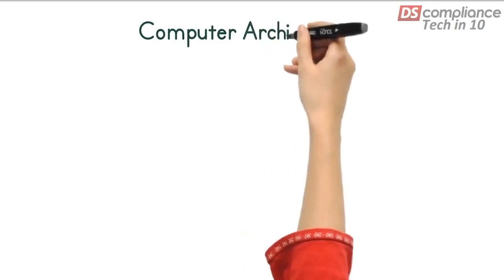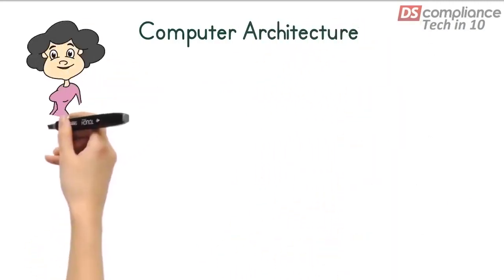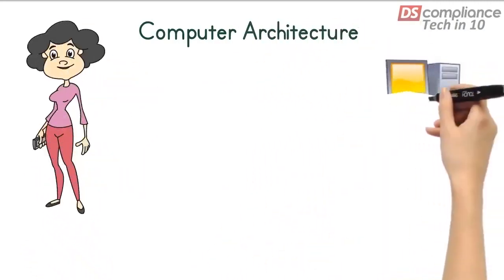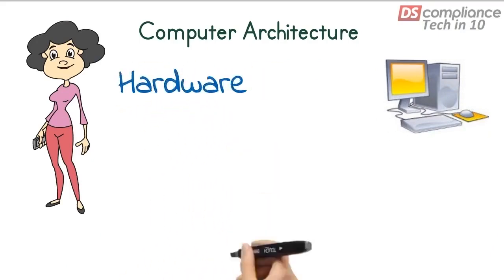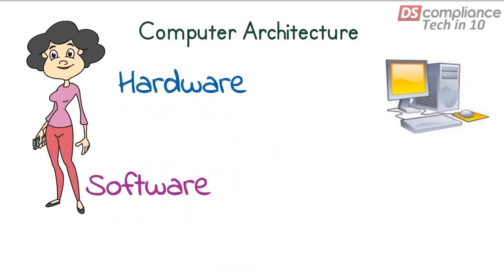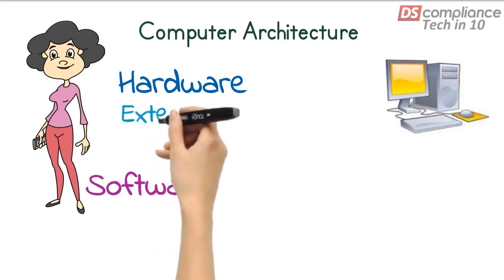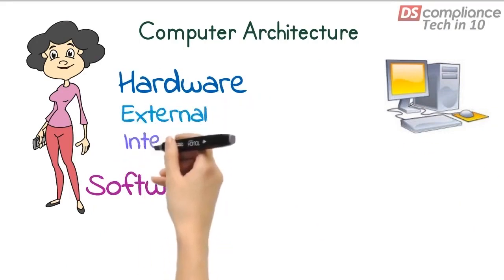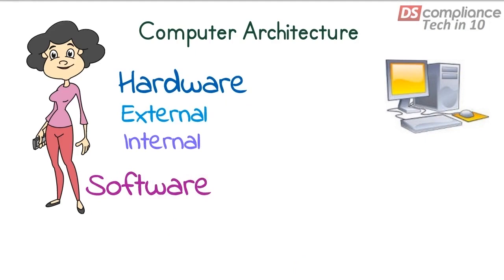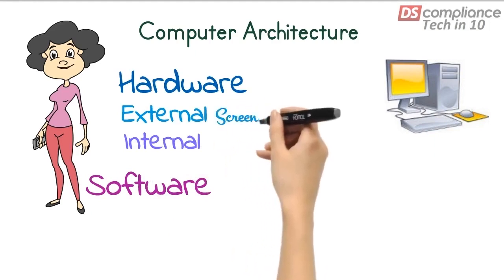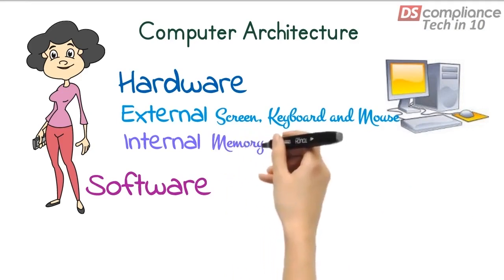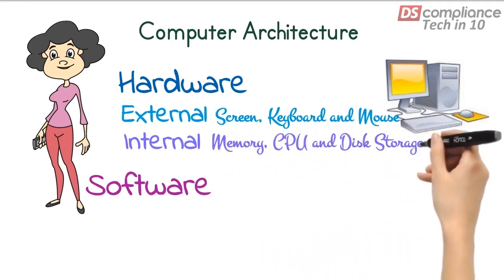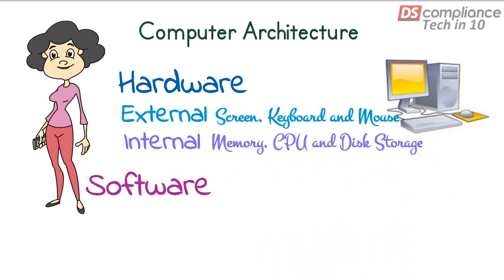Let's summarize. The architecture of all devices like smartphones, TVs and computers is basically the same, and comprises hardware and software. Hardware in turn is split into external and internal. External hardware can be the display screen, keyboard or mouse, and internal hardware includes memory, storage and CPU. Bear in mind, in a mobile phone, tablet or laptop, these are all built into the device.